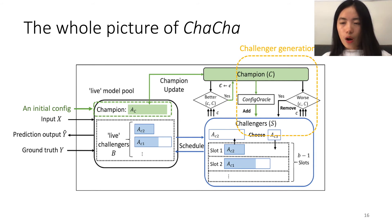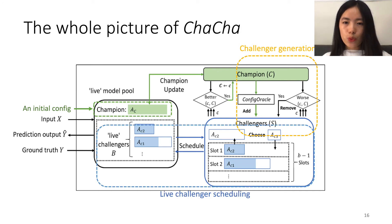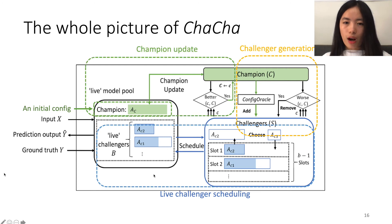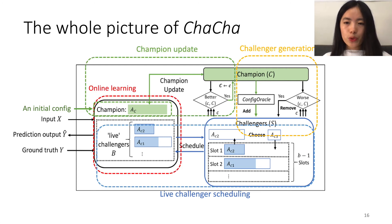Then we call the live Challenger scheduling to decide which ones we want to try at any time point. After all this, we will have a set of live models which can be used to perform online learning. These components will be triggered along the way of the online learning process.